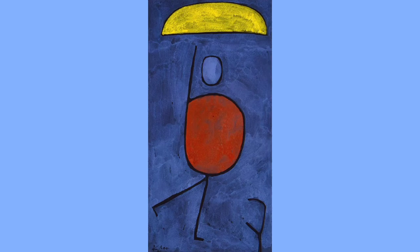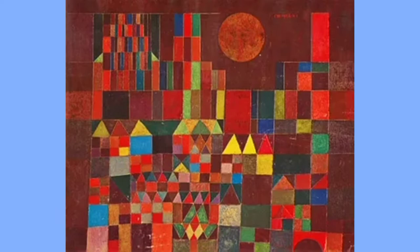Take a look at this one called Castle and Sun. The buildings are made of a collection of various geometric shapes of all sorts of sizes and colors.